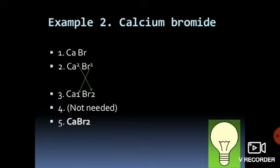For calcium bromide: calcium has valency 2+ and bromine has valency 1−. Cross-multiplying gives CaBr2. The ratio cannot be simplified, so the formula is CaBr2. To summarize the method: write the symbol, write the valency, cross-multiply, cancel equal ratios if present, and the result is the chemical formula.